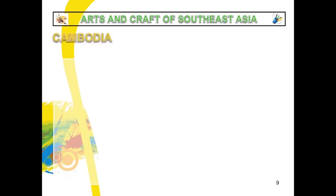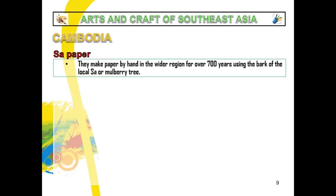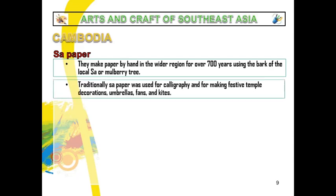Another Southeast Asian country is Cambodia, where their craft is what we call sa paper. They make paper by hand in the wider region for over 700 years using the bark of the local sa or mulberry tree. Traditionally, sa paper was used for calligraphy and for making festive temple decorations, umbrellas, fans, and kites.